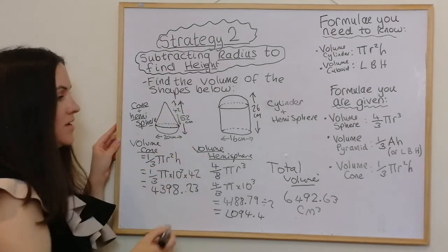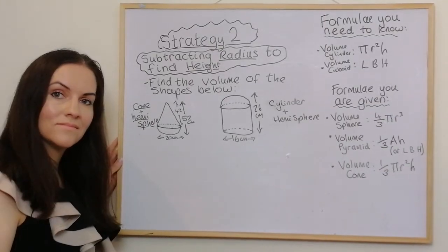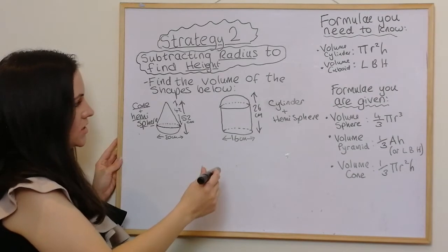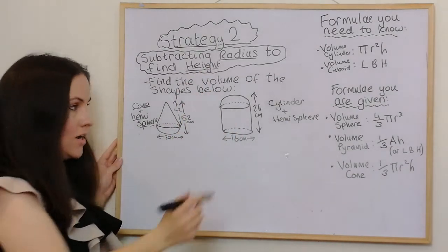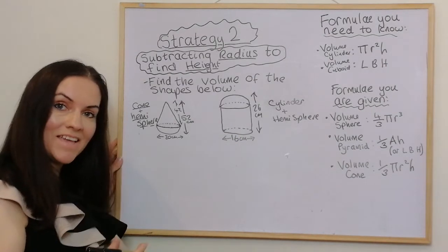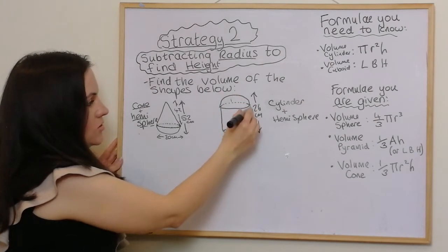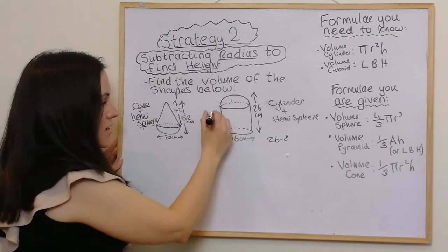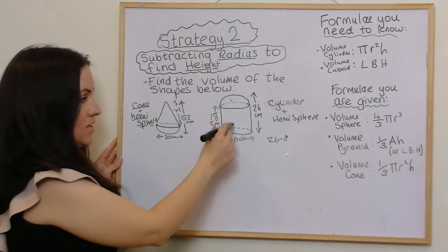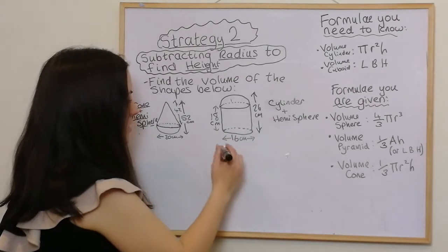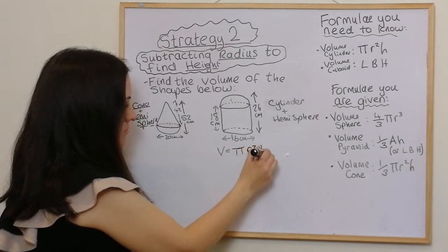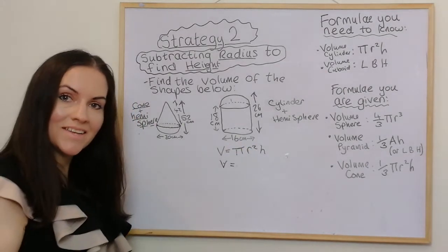The main skill we used there was subtracting the radius from the total height to find the cone height. Now for the second example — another composite shape, a cylinder and a hemisphere. The diameter of the cylinder is 16, so the radius is 8, which also means the hemisphere's height contribution is 8. Doing 26 take away 8 gives 18, so the height of the cylinder is 18 centimetres. The volume of the cylinder is πr²h, with radius 8 and height 18.